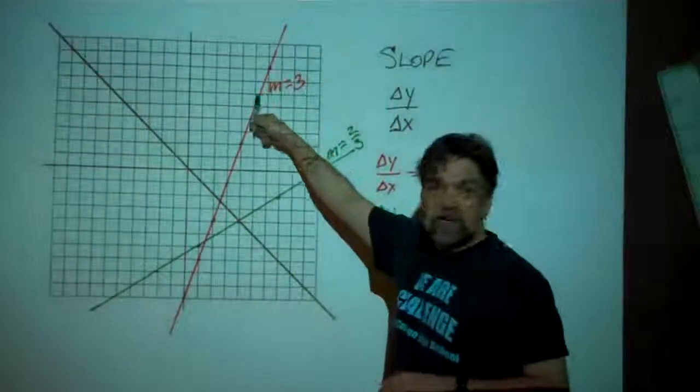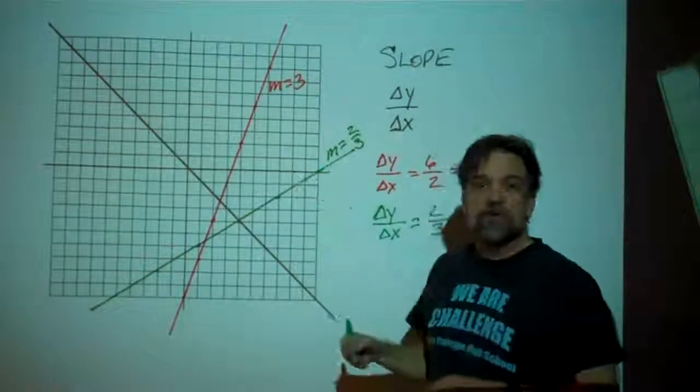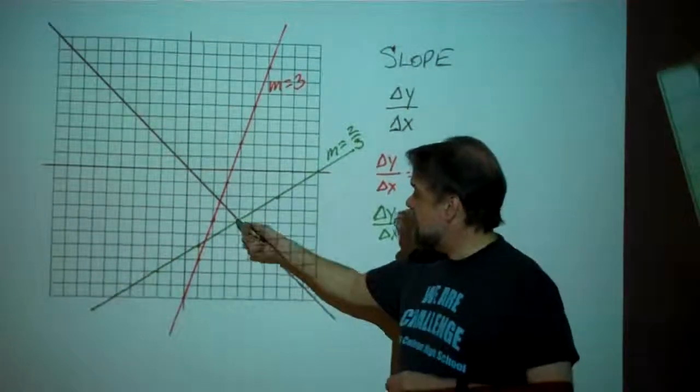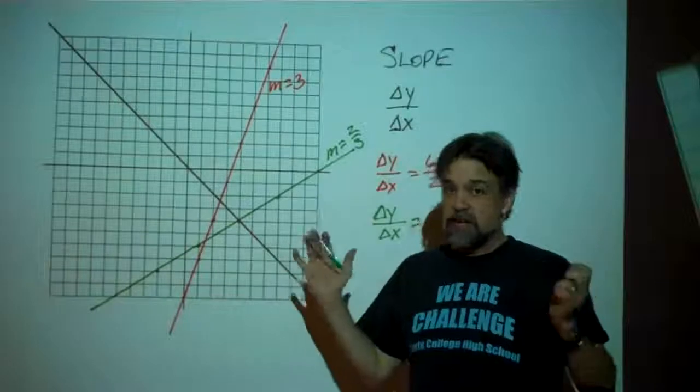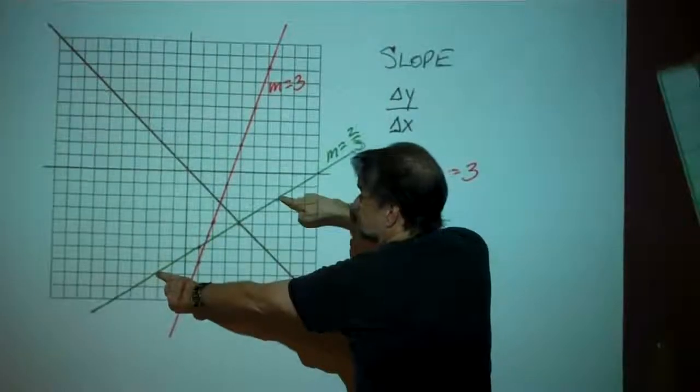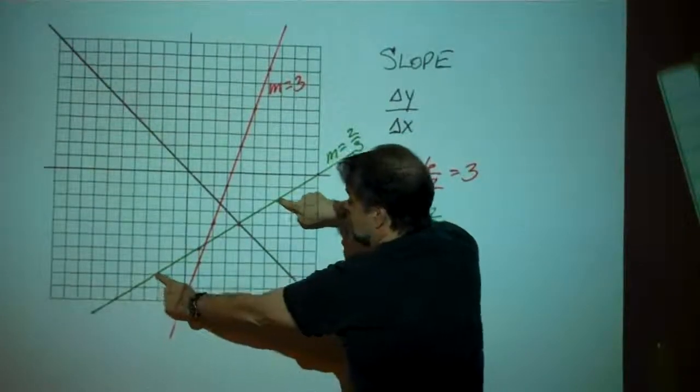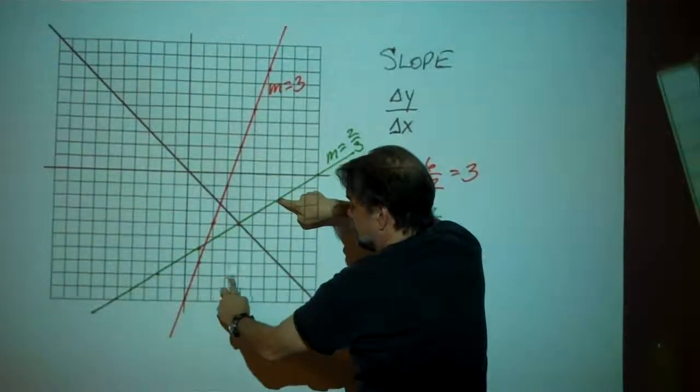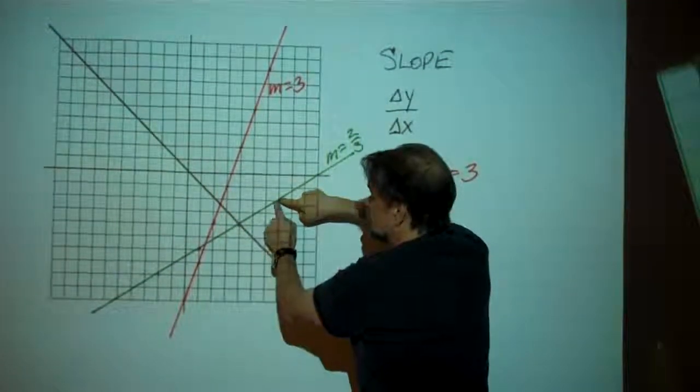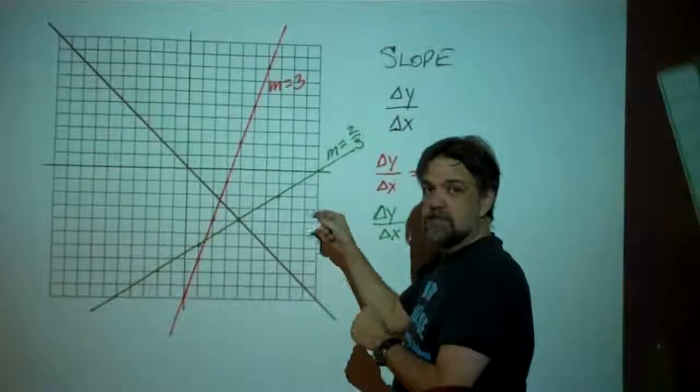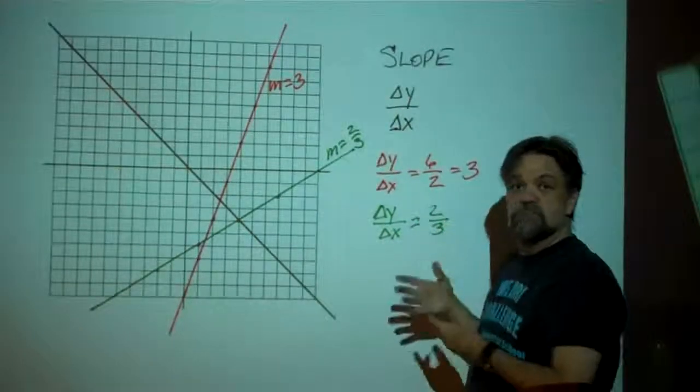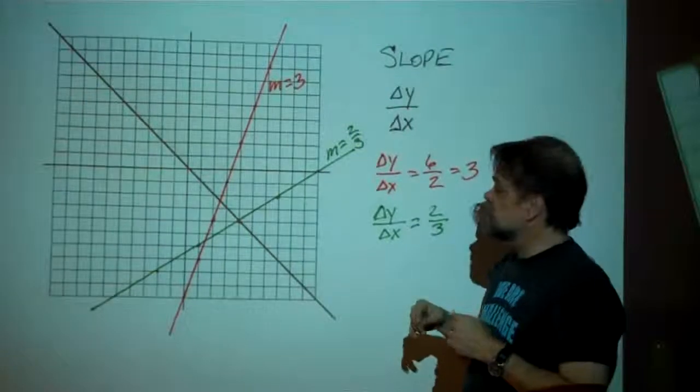Notice, 3 is bigger than 2 thirds. This steeper line has a greater slope than the not so steep line. I also want you to notice that I happen to take these two points, but I could take any two points. I could also have chosen this point here and this point here. If I choose these two points, then my change in x is going to be 1, 2, 3, 4, 5, 6, 7, 8, 9. And my change in y is going to be 1, 2, 3, 4, 5, 6. So that would give me a fraction of 6 over 9, and when I reduce 6 over 9, I get 2 thirds.